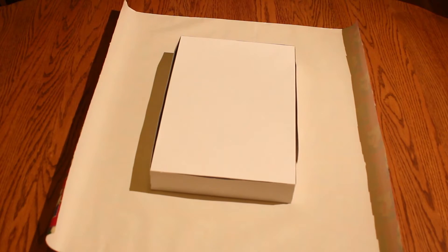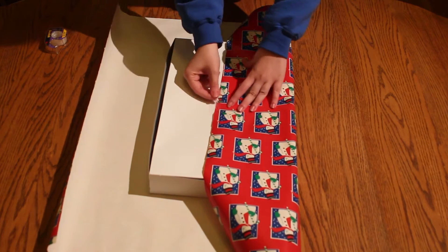Flip the box over and tape the wrapping paper onto the bottom side of the box, then proceed to tape the other side of the wrapping paper to the side that you just taped.